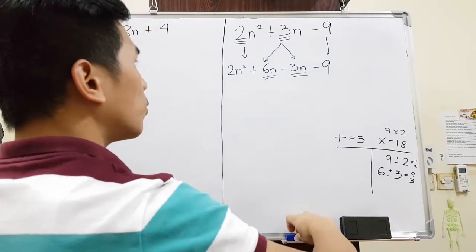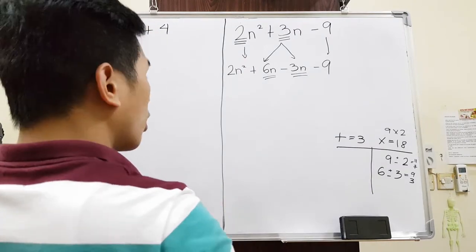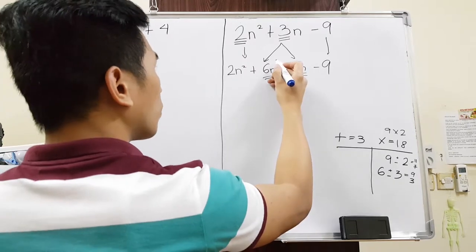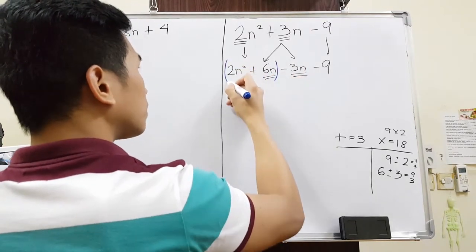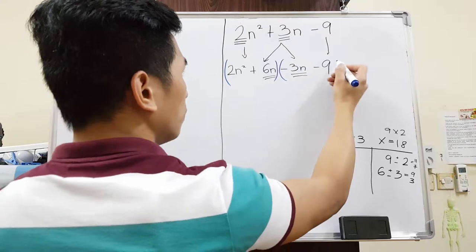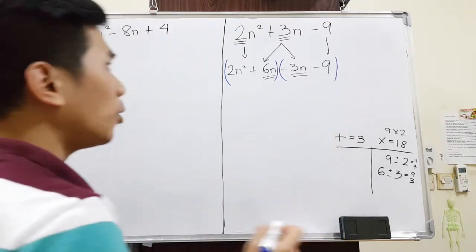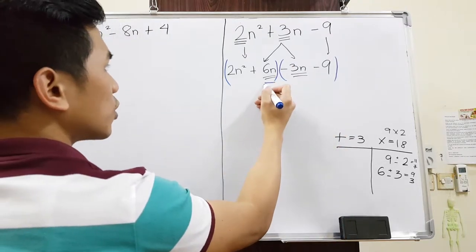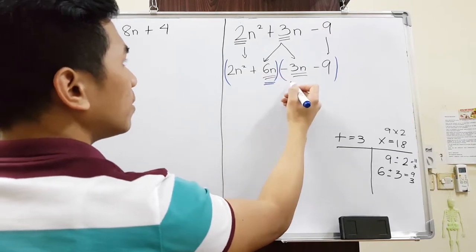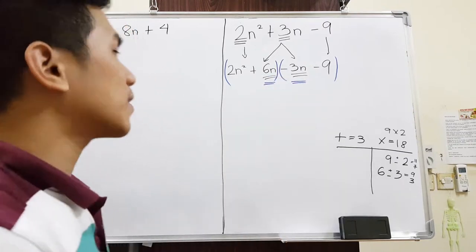Next up, we are going to factor out or we are going to group them. We are going to group the first two and the second two terms. Now, take note, guys. You can actually switch this. You can write minus 3n here and you can write 6n here. It doesn't matter. You will get the same answer.